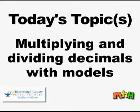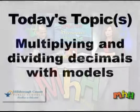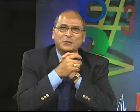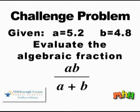We're back live with another caller. Our topic tonight is multiplying and dividing decimals with models. The challenge question is still open — no winner yet. Given A equals 5.2 and B equals 4.8, evaluate the algebraic fraction AB over A plus B. AB means A times B. Find the value of A times B, then find A plus B, then divide — because that fraction bar is a division operation. We're waiting for your call.